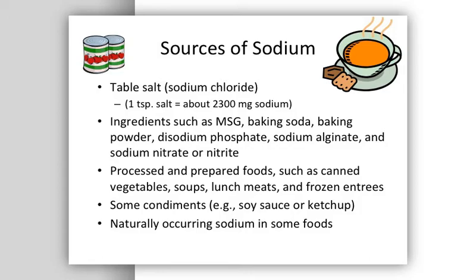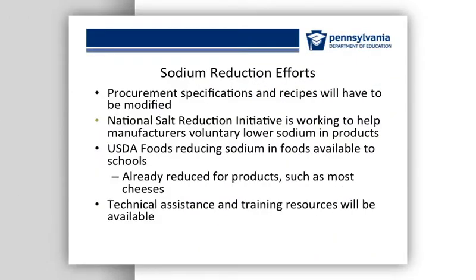Some foods contain naturally occurring sodium. There are several ways to reduce the sodium in your meals. Examine your recipes and see where they have salt that can be reduced or omitted. You can compare similar items and try to purchase items that are lower in sodium. It should become easier to purchase lower-sodium products because many major companies are voluntarily reducing the sodium in their products as part of a national salt reduction initiative. USDA is working on reducing the sodium in foods available through the commodity program, and they already offer some reduced sodium commodities such as cheeses and beans.